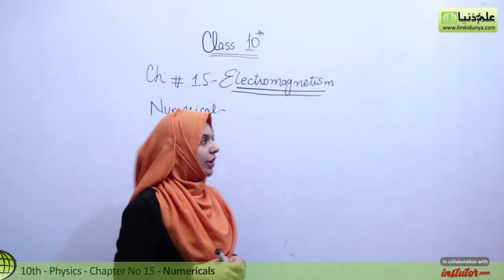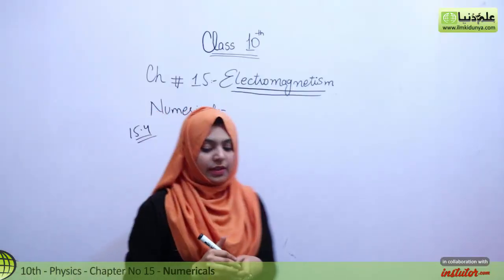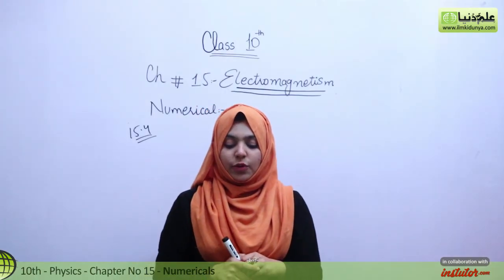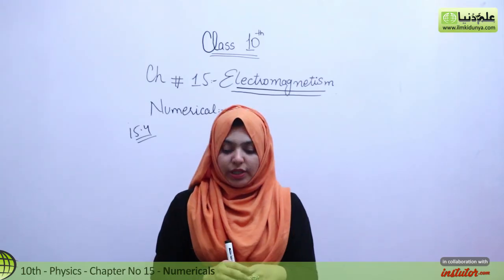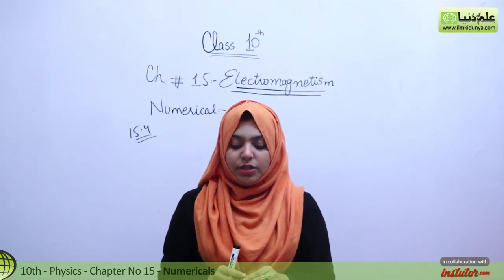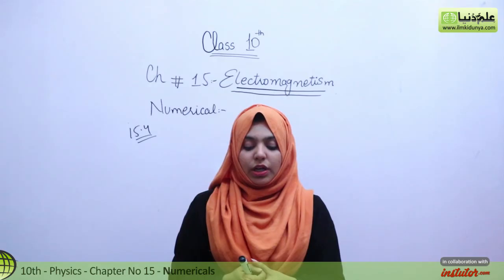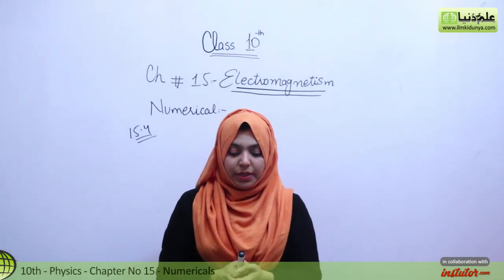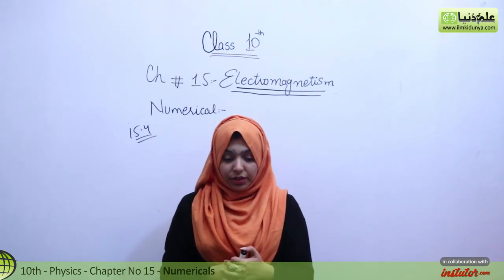Numerical number 15.4: a transformer is designed to convert the voltage from 240 volt AC mains to 12 volts. There are 4,000 turns in the primary coil. How many turns should be on the secondary coil? If the transformer were 100% efficient, what current would flow through the primary coil when the current in the secondary coil was 0.4 ampere?